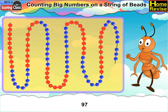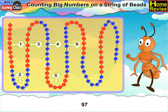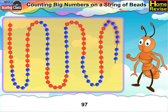Number 97. For number 97, in the string of 100 beads, first we'll count 10 red beads, followed by 10 blue beads, then again 10 red beads, followed by 10 blue beads, then again 10 red beads, followed by 10 blue beads, further followed by 10 red beads, again followed by 10 blue beads, and then we have 10 red beads. Now count next 7 blue beads. Place the clip after 7 blue beads. This is your number 97.